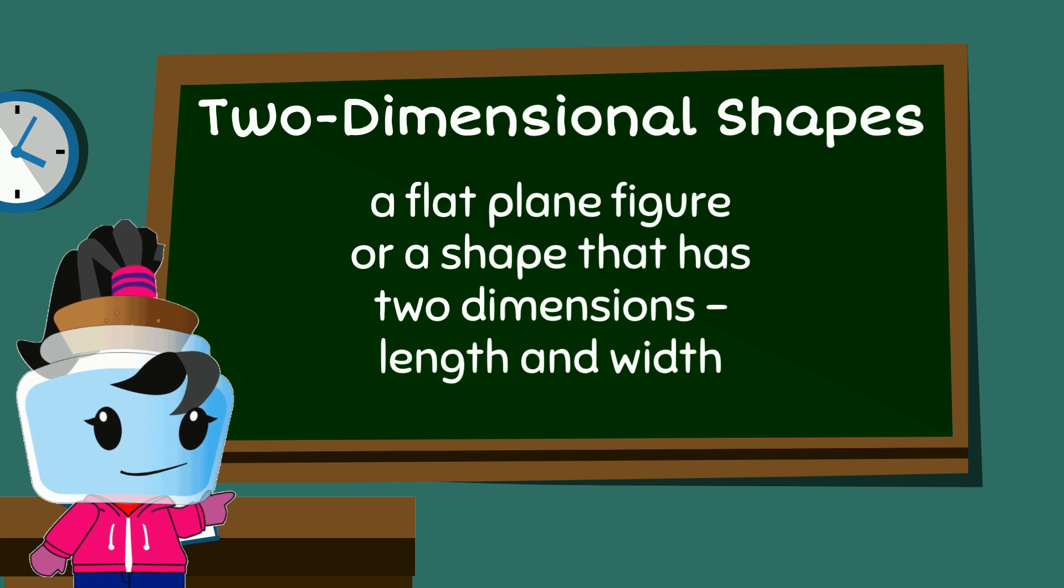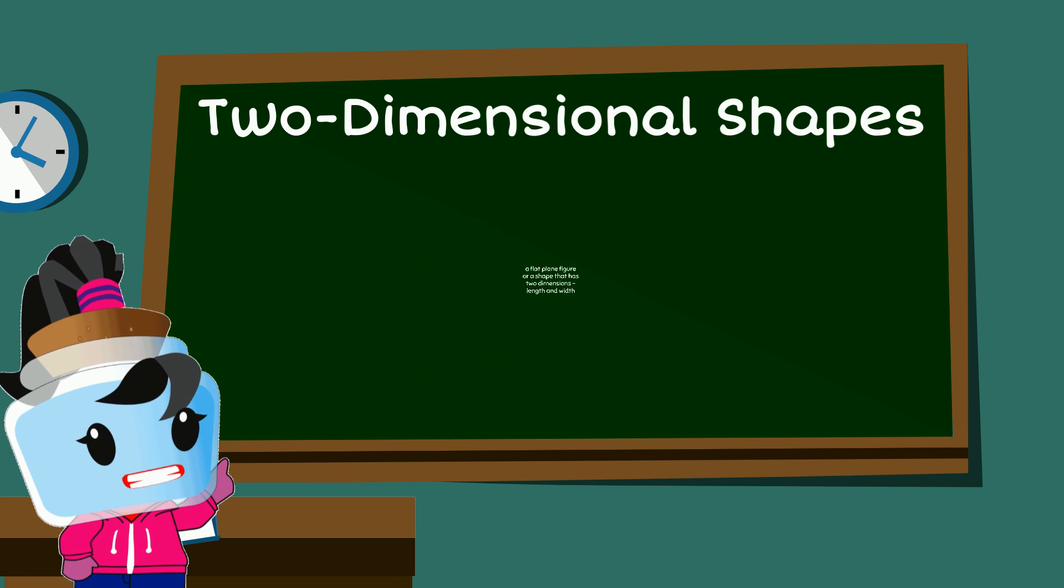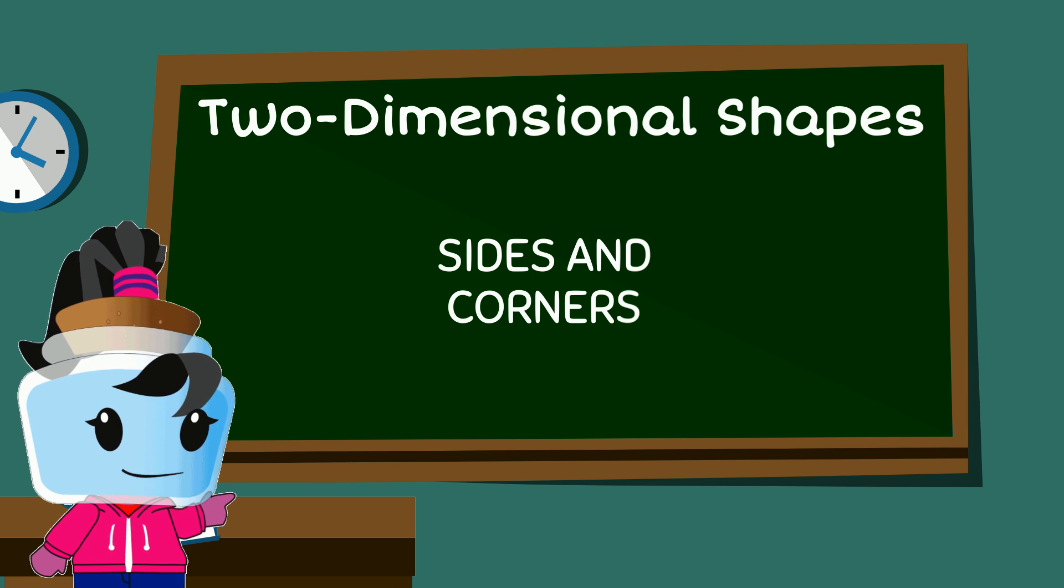To classify 2D shapes, we look at the number of sides and corners. This first shape is a circle. Circles have no